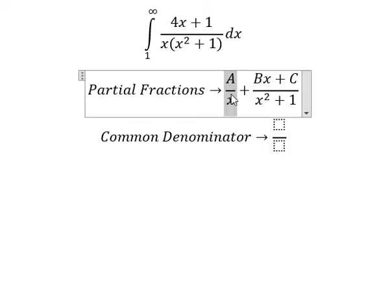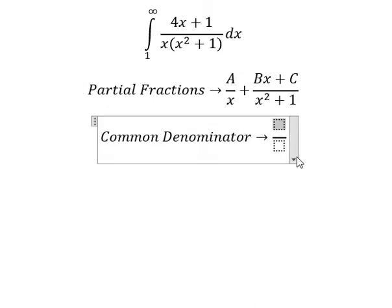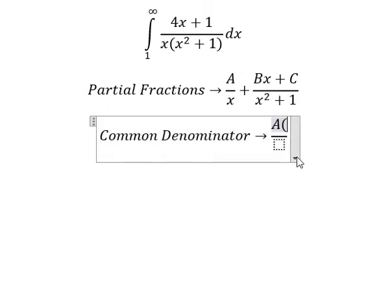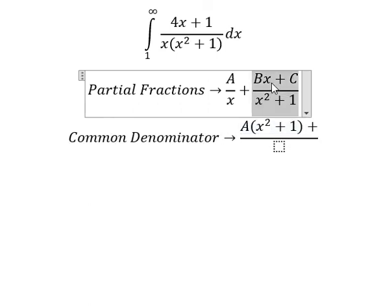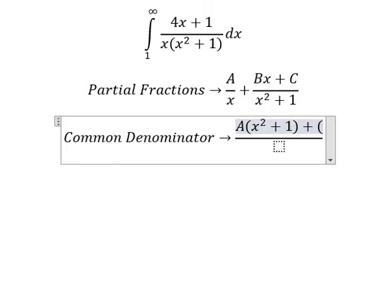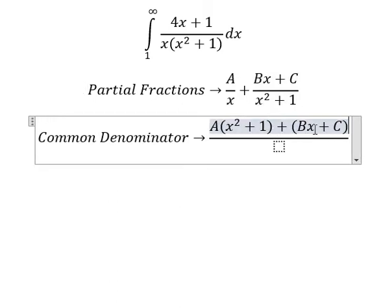This term is missing the factor (x squared plus 1), so A is multiplied by (x squared plus 1). This term is missing the factor x, so (Bx plus C) is multiplied by x.